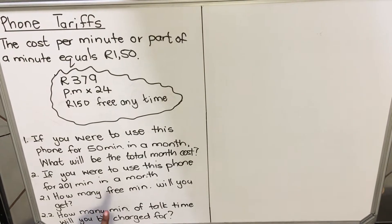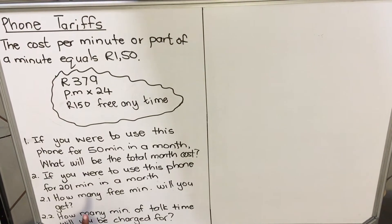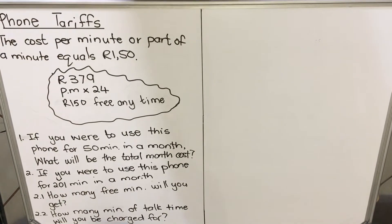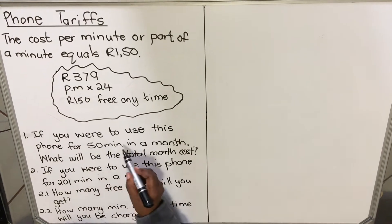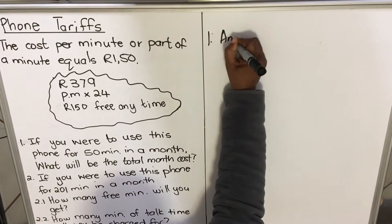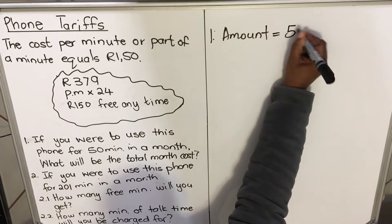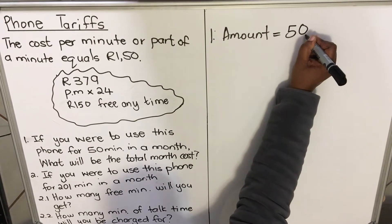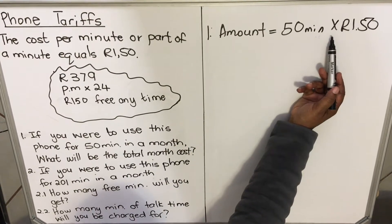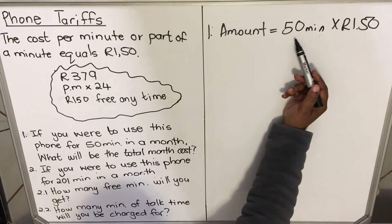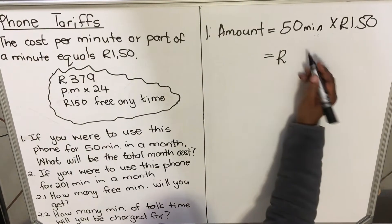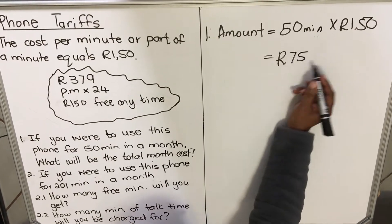The first question says: if you were to use this phone for 50 minutes in a month, what will be the total monthly cost? The first thing you need to do is calculate how much you will pay for 50 minutes. Each minute costs 150, so 50 minutes multiplied by 150 gives you 75 francs.